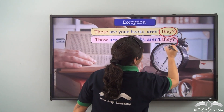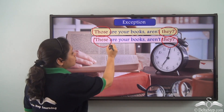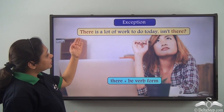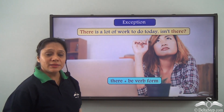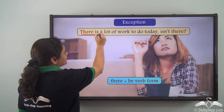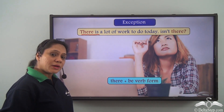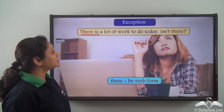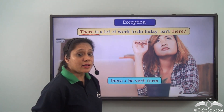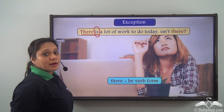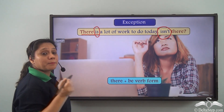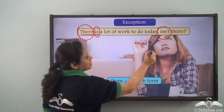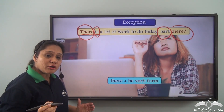Similarly, in sentences like 'Those are your books, aren't they?' and 'These are your books, aren't they?' we use 'they' because 'those' and 'these' are referring to 'your books.' In 'There is a lot of work to do today, isn't there?' the statement starts with 'there' followed by a form of the verb 'be.' In this exceptional construction, instead of a pronoun we use 'there' as an adverb in the question tag — so be careful of this formation.